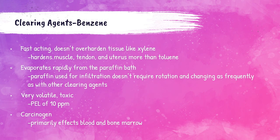Benzene is quick-acting and, like toluene, does not over-harden tissue like xylene does, though it does tend to harden muscle tissue, tendons, and uterine tissue more than toluene. It vaporizes very quickly from the paraffin bath, so it doesn't require changing as frequently. Benzene should not be used in open processors because it is very toxic and a carcinogen. Its OSHA PEL is 10 parts per million.